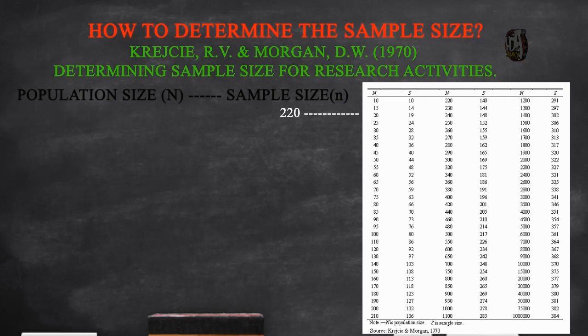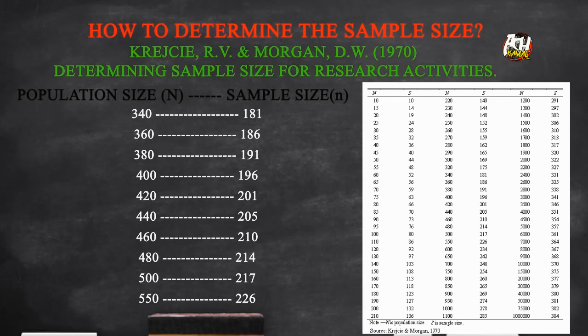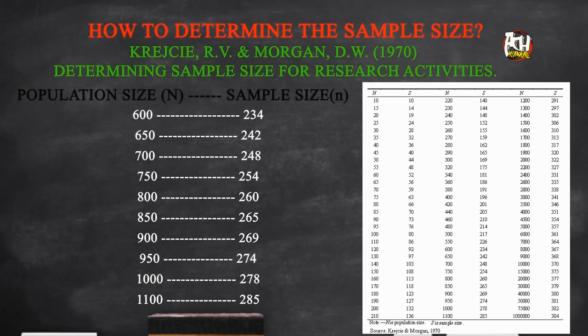Researchers can help themselves by calculating the sample size according to existing formulas such as Slovin, Yamane, and Cochran. One of the most used methods is the Krejcie and Morgan (1970) sampling method for determining the sample size for a finite population.